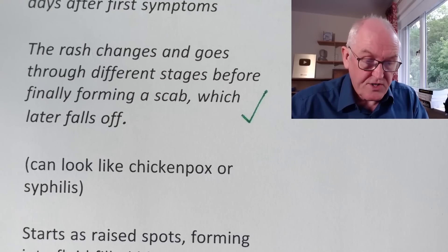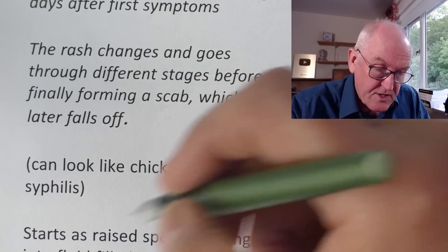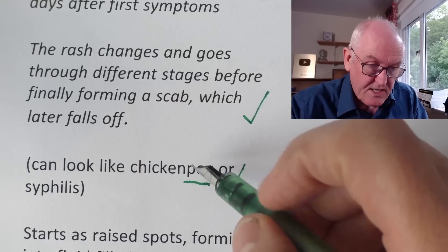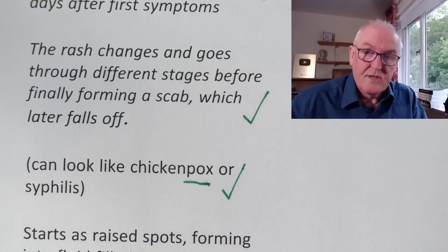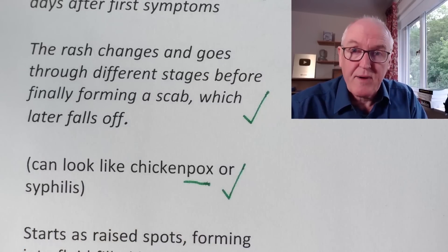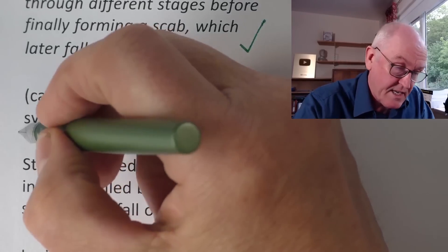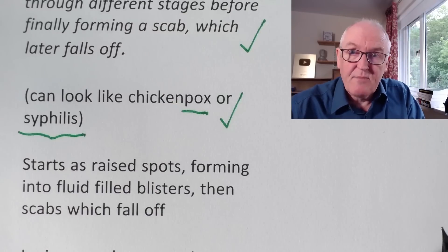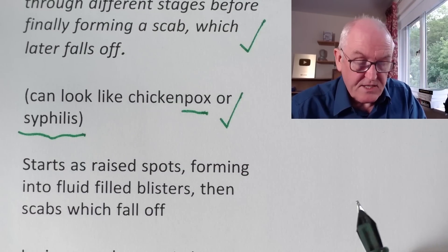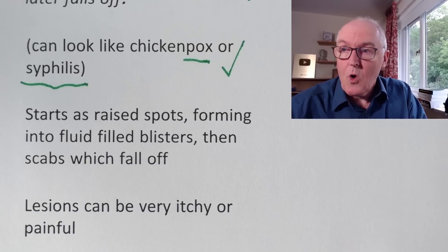The rash can look like chickenpox, syphilis, or smallpox — these are called pox because they have pustular spots. Chickenpox is caused by a completely different virus, and syphilis is a bacterial infection. We see very little syphilis now because it's largely treatable with effective antibiotics. The lesions start as raised spots, form into fluid-filled blisters, then scabs which fall off, and can be very itchy or painful.